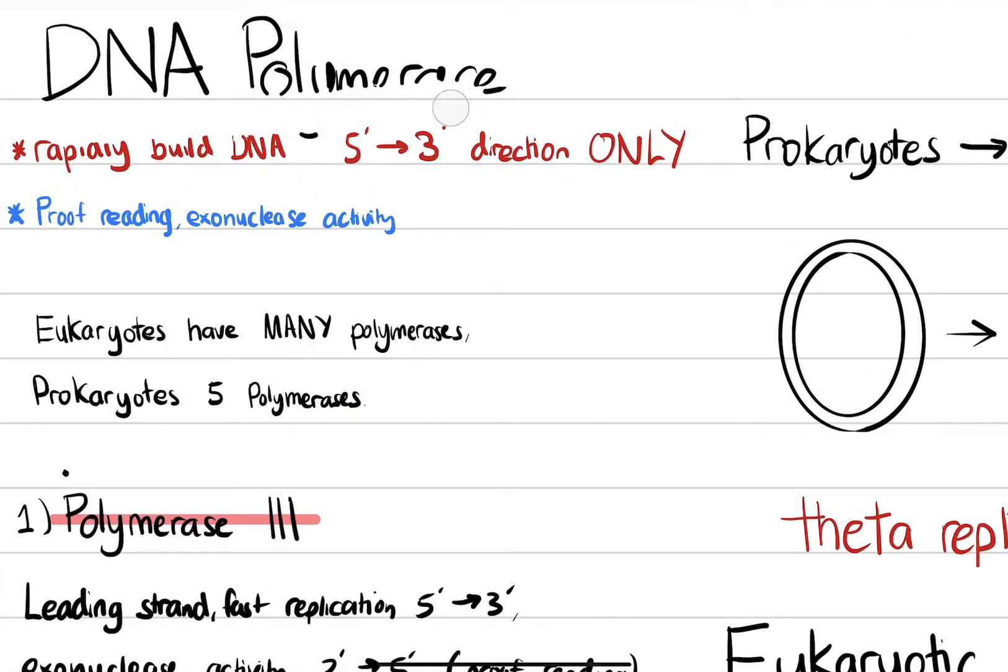Okay, so DNA polymerase has two primary functions. The first is rapidly building DNA in the 5' to 3' direction only. You will never have DNA being built in the 3' to 5' direction. That never happens.